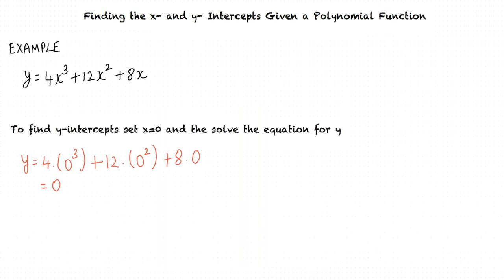To find the y-intercept of the function, the equation becomes y equals 4 times (0)³ plus 12 times (0)² plus 8 times 0 equals 0. The point where the function intersects the y-axis is at the origin (0, 0).